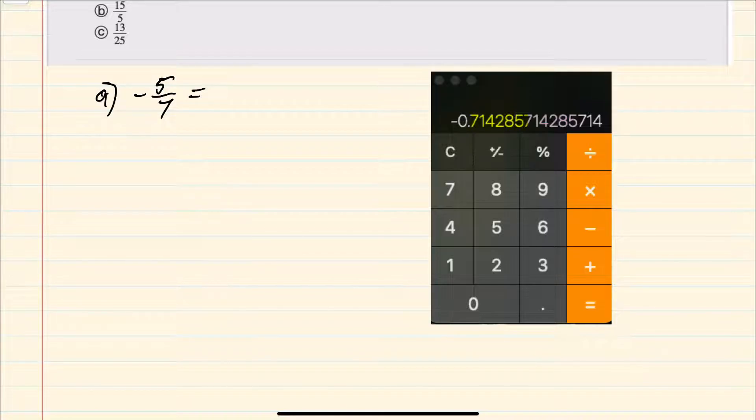We can see that this is a repeating decimal, and we can write it as negative 0.714285 with a line over all of those digits to indicate that they will repeat again and again for this fraction. For b,